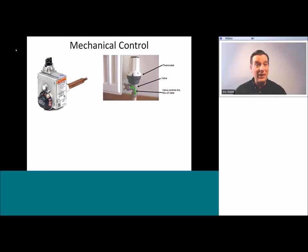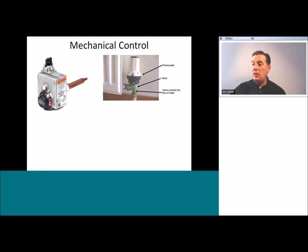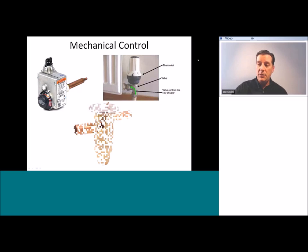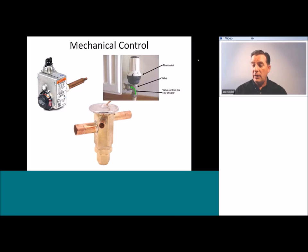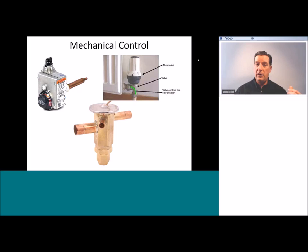A thermostatic radiator valve does exactly the same thing, but instead of sensing water temperature it senses surrounding air temperature, and instead of opening a gas valve it opens and closes a valve that flows warm water into the radiator on demand. Another common example is the thermostatic expansion valve, which physically opens and closes a valve in response to temperatures and pressures. The basic idea is that the device has a sensing element that senses the controlled medium and physically moves to operate a valve.